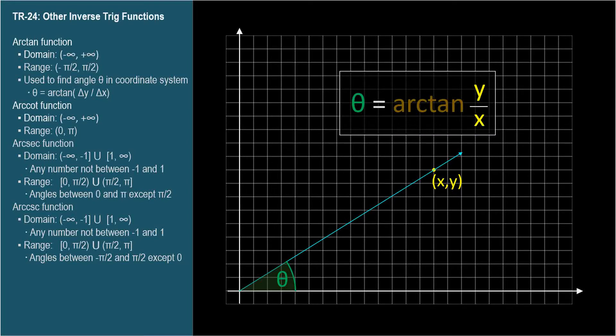Tangent is opposite over adjacent, which is y over x. So we want the angle whose tangent is y over x. Arctan y over x.